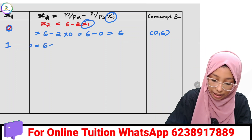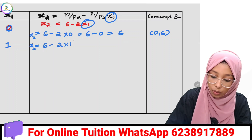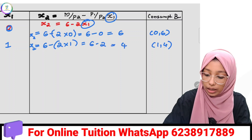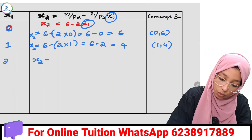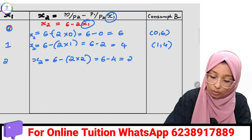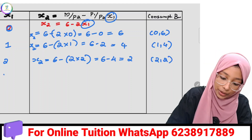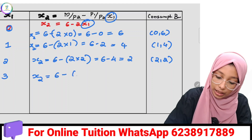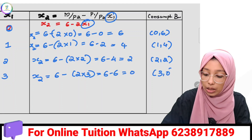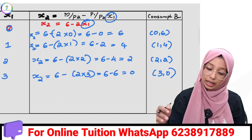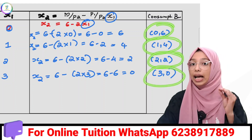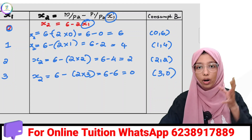When x1 equals 1, x2 equals 6 minus 2 into 1, which is 6 minus 2 equal to 4. So the bundle is (1, 4). When x1 equals 2, x2 equals 6 minus 2 into 2, which is 6 minus 4 equal to 2. So the bundle is (2, 2). When x1 equals 3, x2 equals 6 minus 2 into 3, which is 6 minus 6 equal to 0. So the bundle is (3, 0). Thus the four consumption bundles on the budget line are (0, 6), (1, 4), (2, 2), and (3, 0).